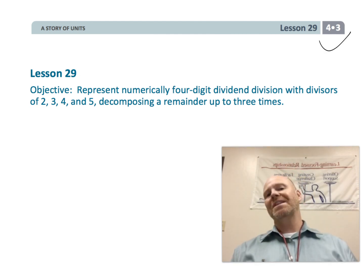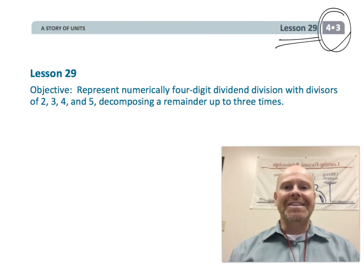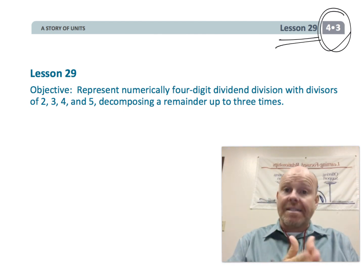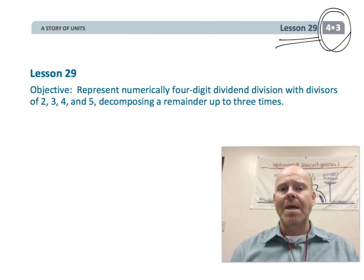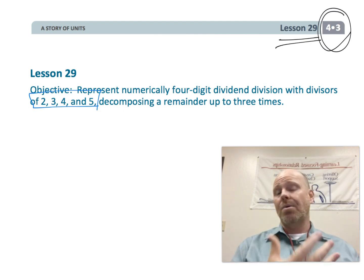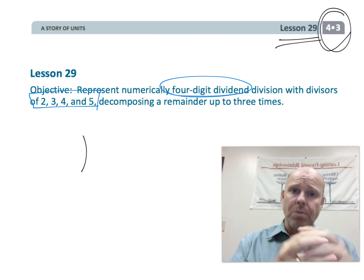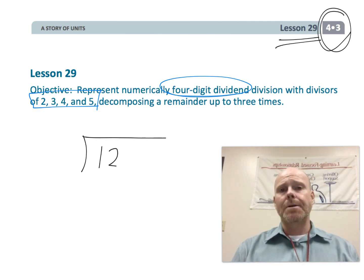All right, this is fourth grade module 3 lesson 29. In this lesson students are just going to be continuing to practice that standard algorithm for division. We're going to keep it simple. We're going to be dividing by 2, 3, 4, and 5. What's different this time is now we're going to be dividing into a four digit number. So our dividend inside the house is going to be a four digit number. So we're increasing the complexity a little bit.